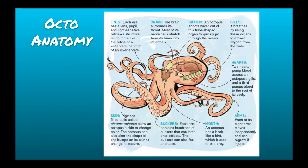Usually they live in coral reef environments, and all of those arms help them be really agile in navigating rocky terrain. They also have skin that can change color and texture so they can blend in with different environments. They also have two hearts that pump blood through the octopus's gills and a third heart that pumps blood to the rest of the body. They are extremely intelligent creatures.